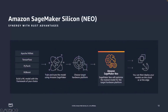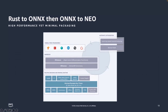An important integration is Amazon SageMaker Silicon, or Neo. You can build and train models targeted for a specific hardware platform and get optimized performance. A compelling story is: build a model with Rust, convert it to ONNX, and then ONNX goes to Neo — integrating open source Apache frameworks directly with Amazon SageMaker.